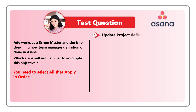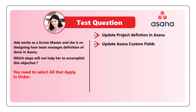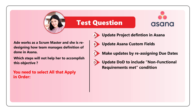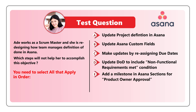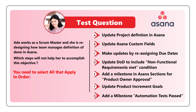Choice A: Update product definition in Asana. Choice B: Update Asana custom fields. Choice C: Make updates by redesigning due dates. Choice D: Update DoD to include non-functional requirements met condition. Choice E: Add a milestone in Asana section for product owner approval. Choice F: Update product increment goals. Choice G: Add a milestone — automation test passed.